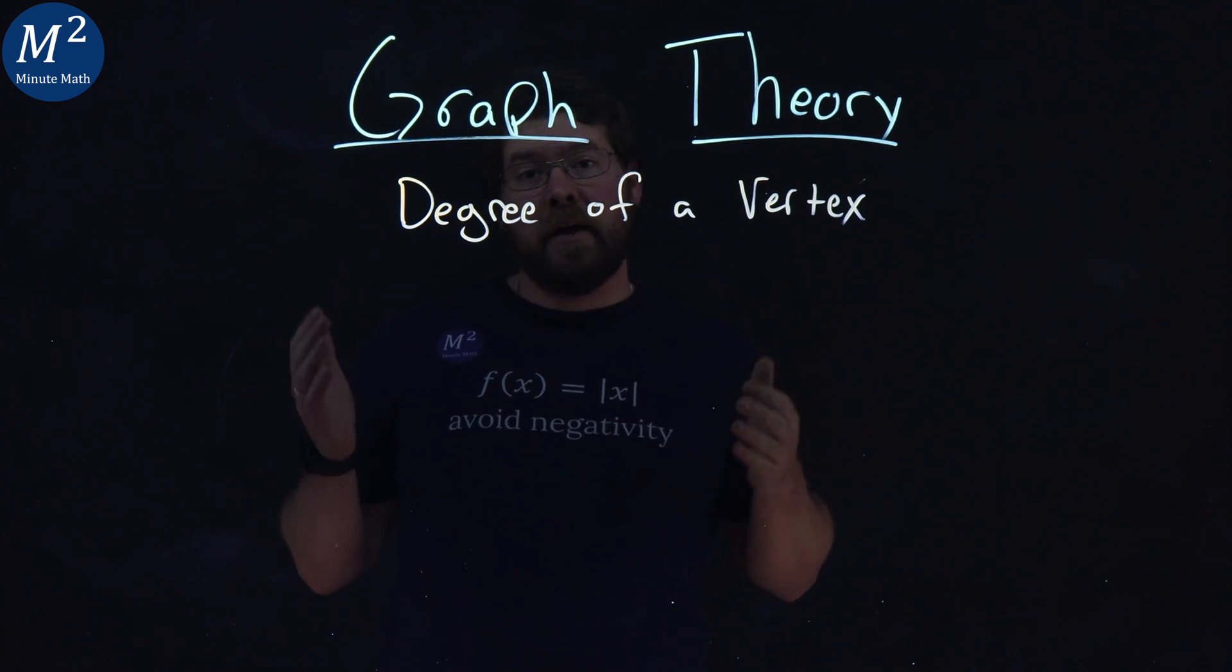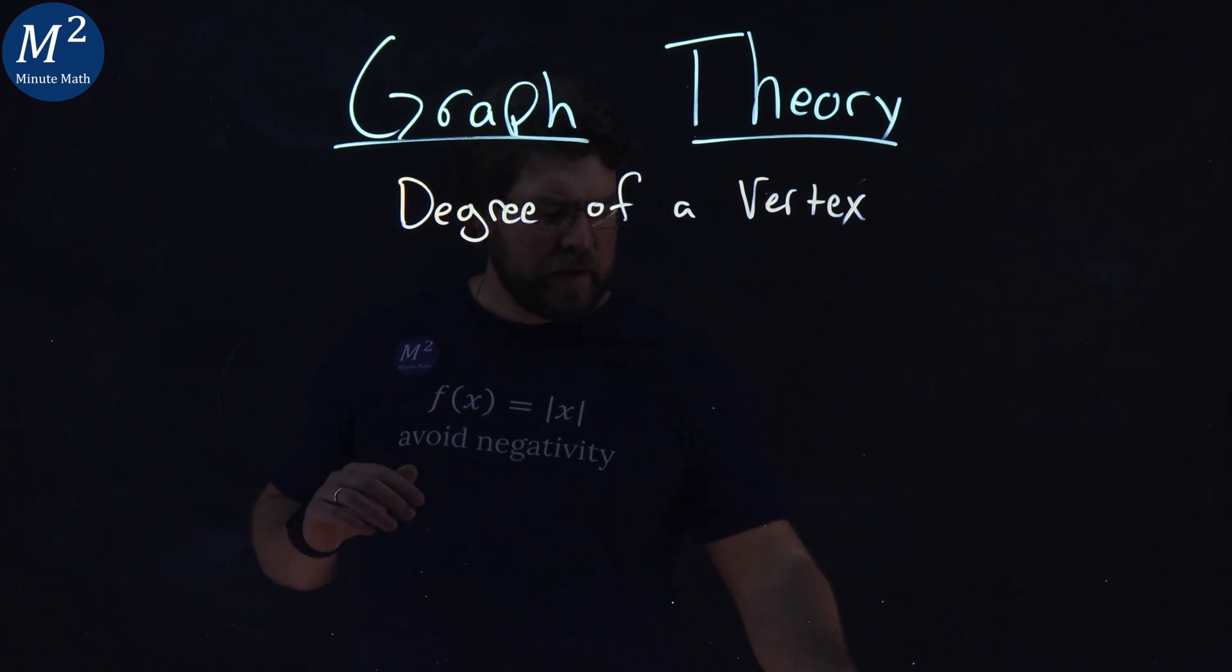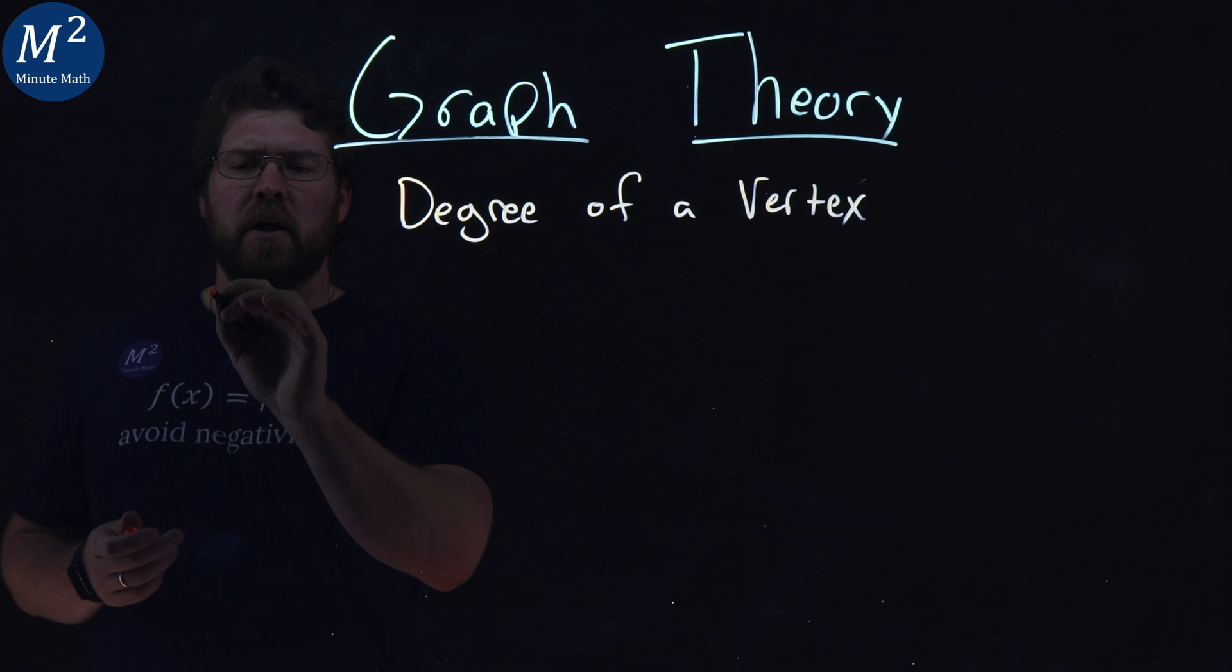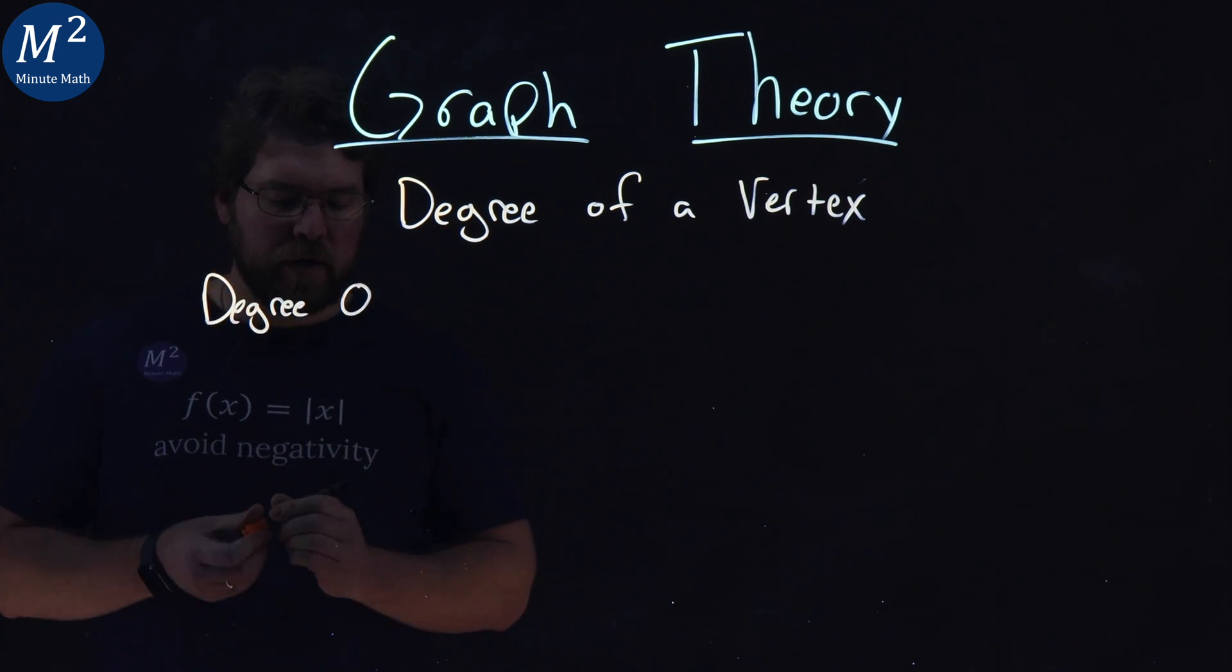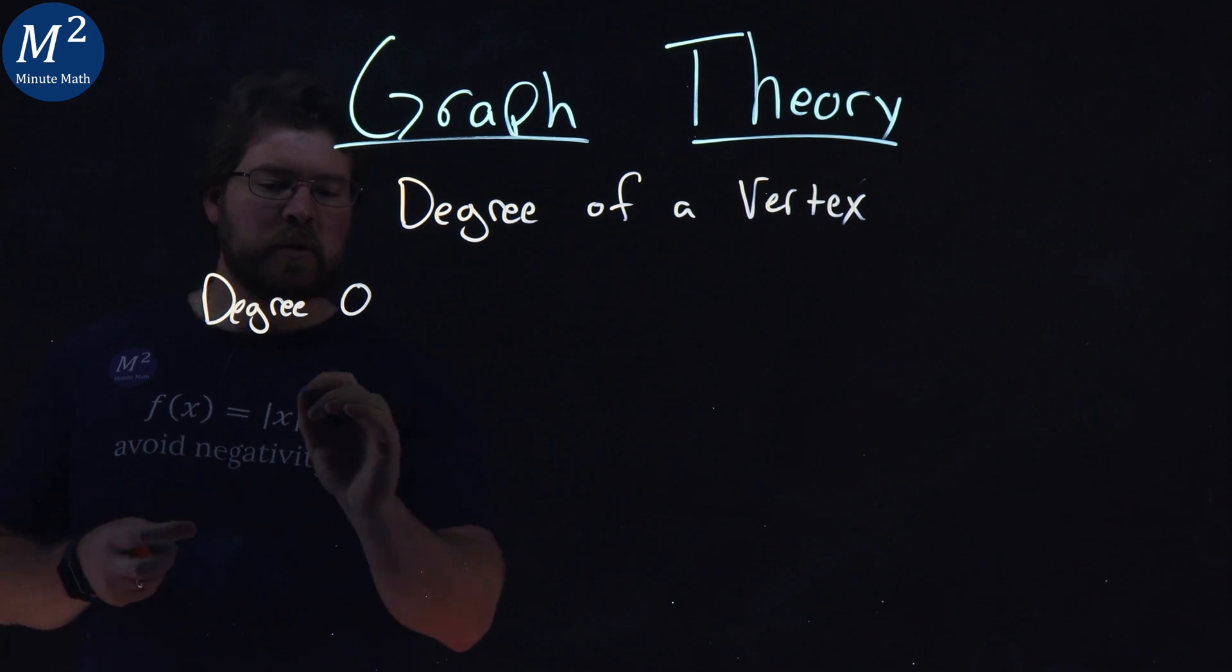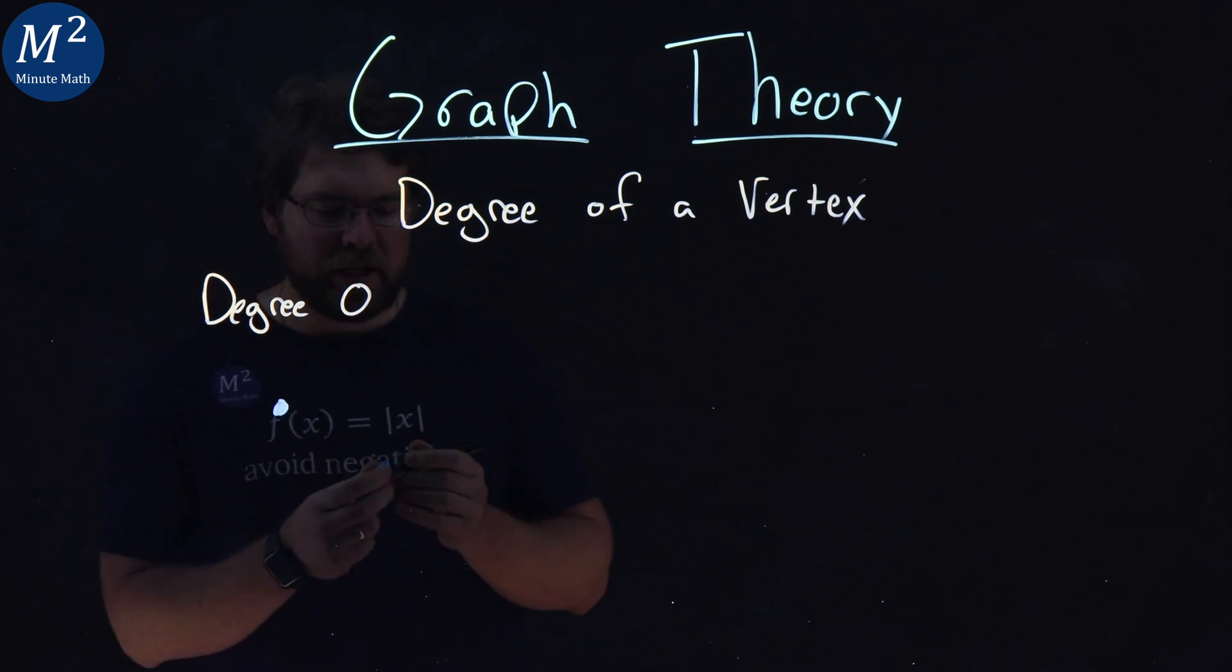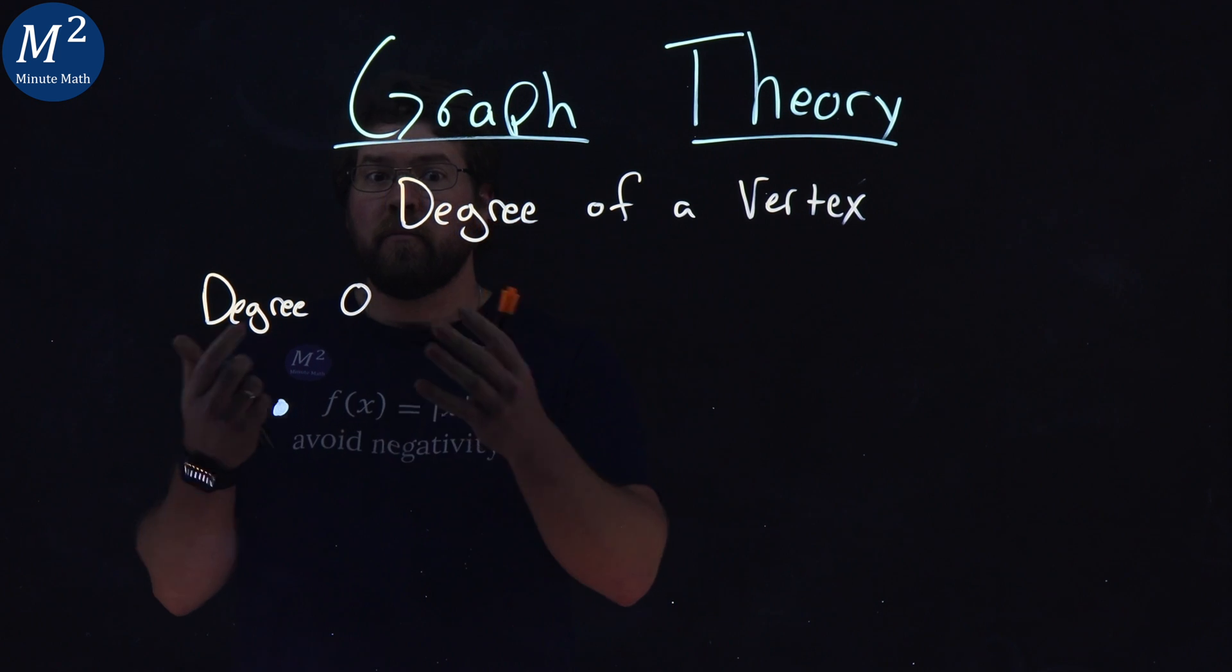What is the degree of a vertex? We're going to see this with an example. If we have a degree zero, that is going to be a single vertex by itself. It has no edges that come from it.